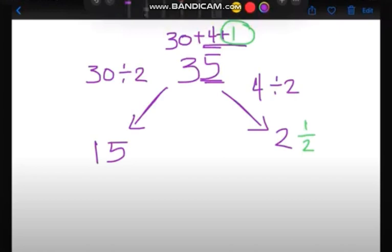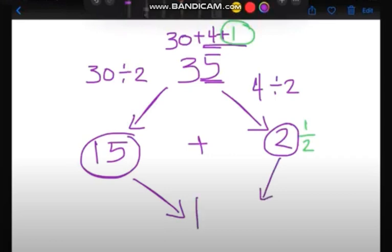Now remember that the answer for our division is called quotient. For the quotient, we are going to add 15 and 2. Now why did I say only 15 and 2? What will happen to this half here? Later you'll find out when we write our final answer. So 15 plus 2, that would be equal to 17.